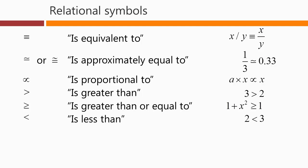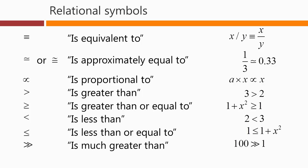Similarly, we have the is less than sign and the is less than or equal to sign. And sometimes we want to say that something is much greater than something else. For example, 100 is much greater than 1. So we use the greater than sign twice here. And similarly, is much less than. 1 is much less than 100.